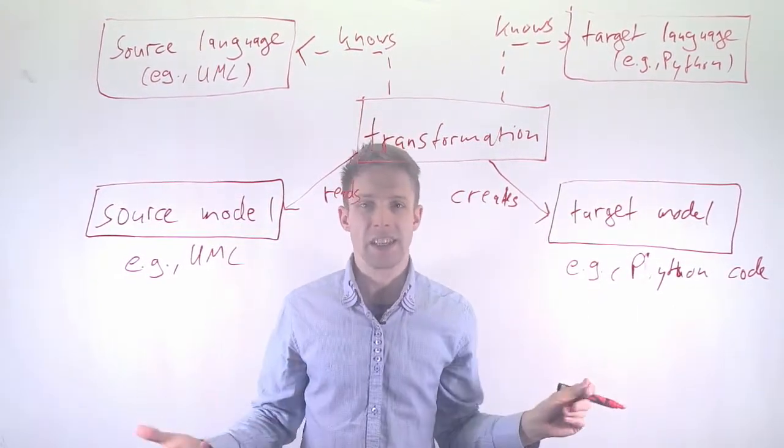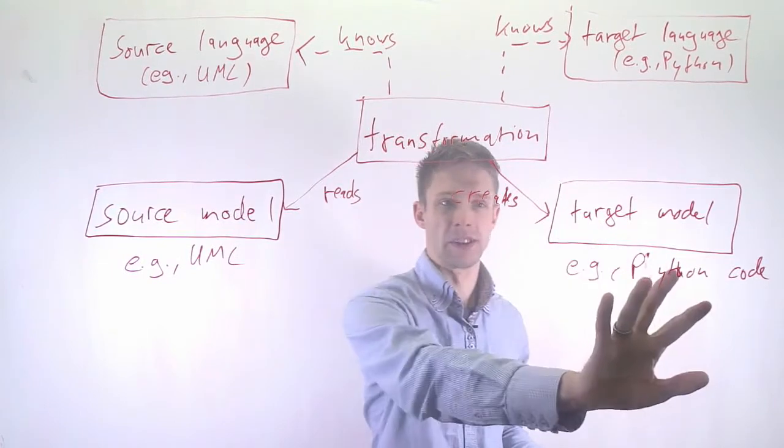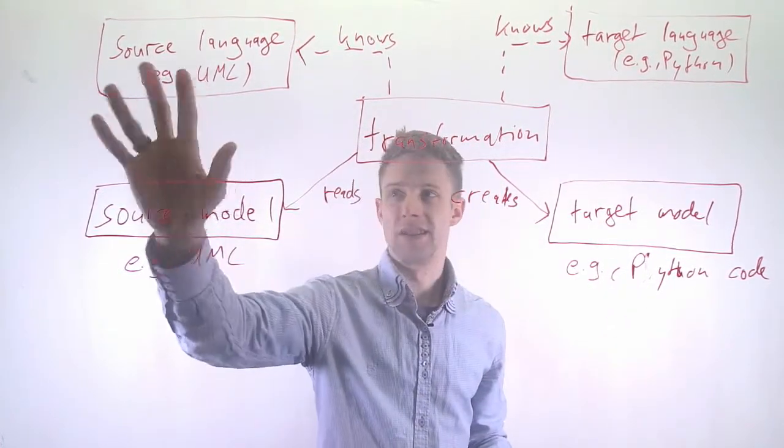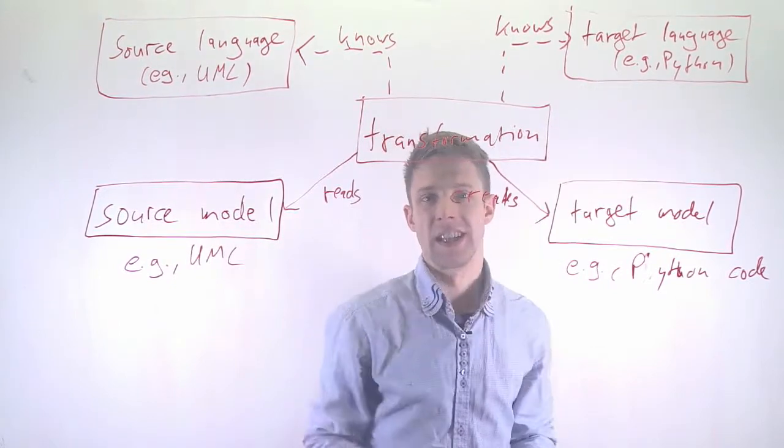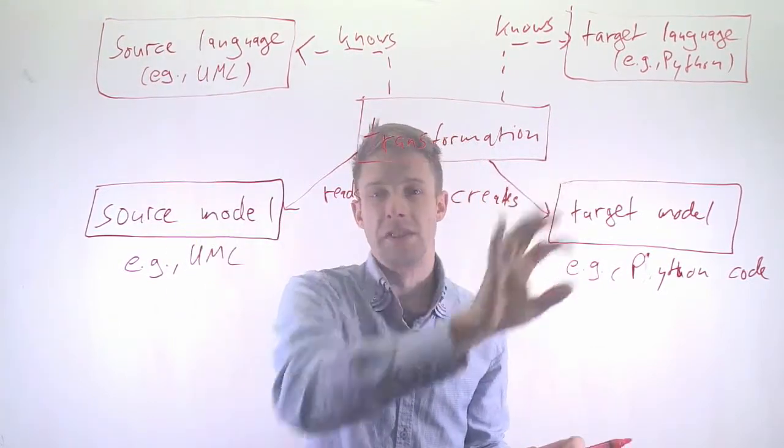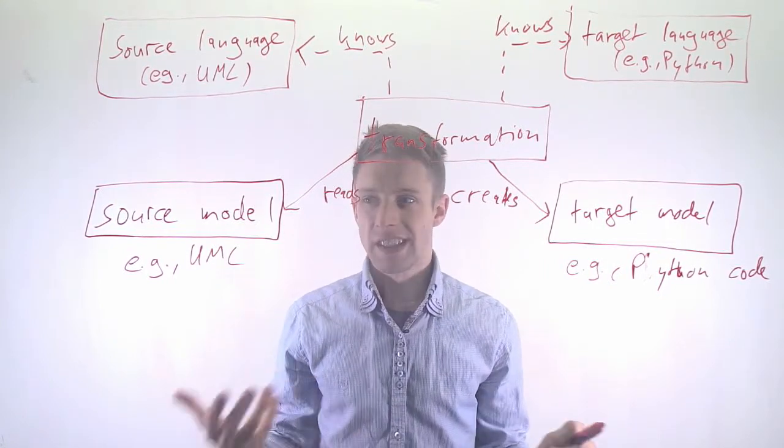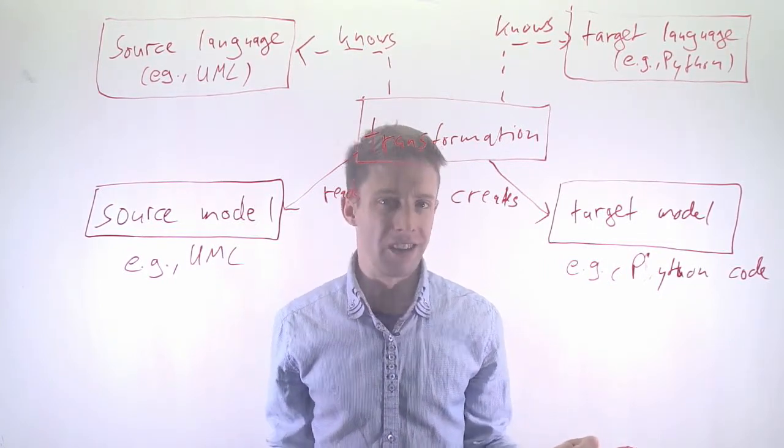So that's essentially our transformation chain. We have a source model that we transform into a target model. And in order for that to work, the transformation needs to know what the source language is and what the target language is. And these somehow need to be formally described. This might sound a bit strange to you, but that's exactly pretty much what a compiler does.